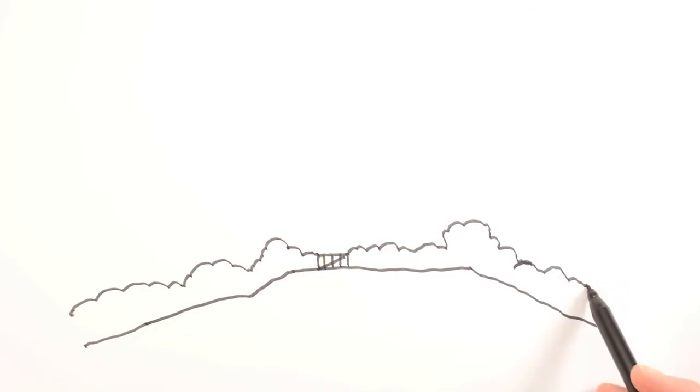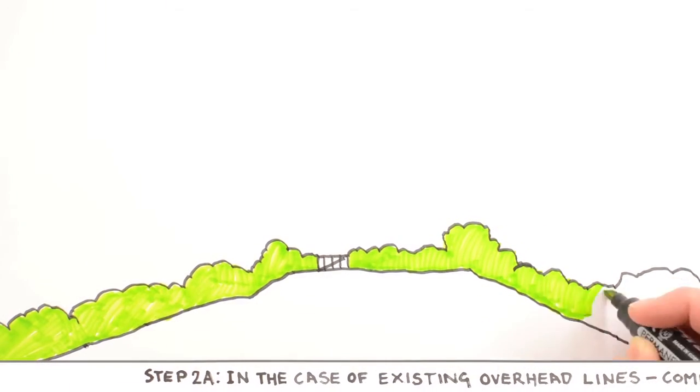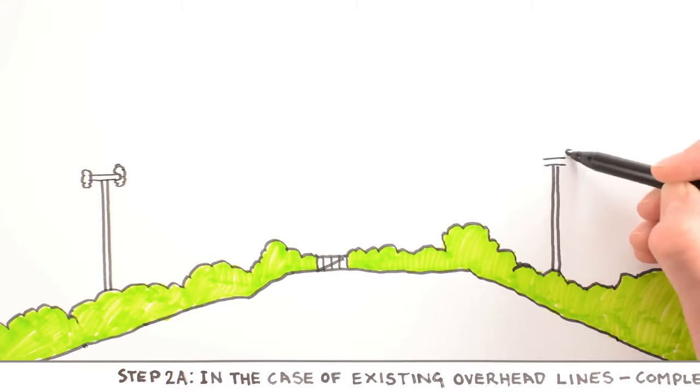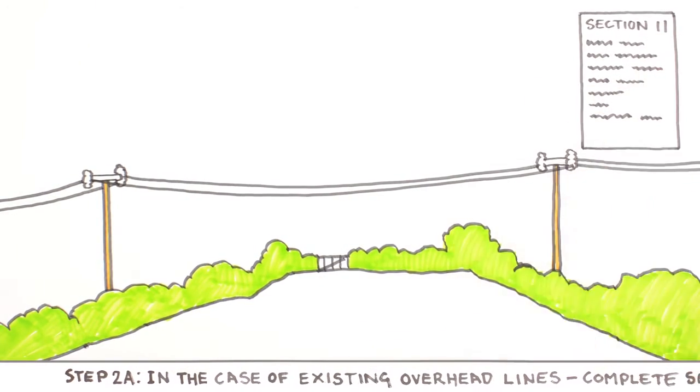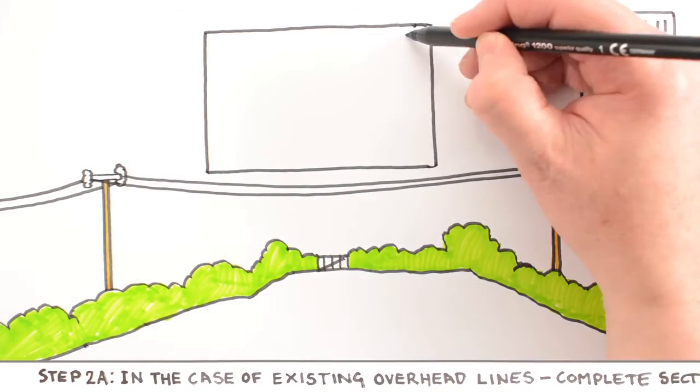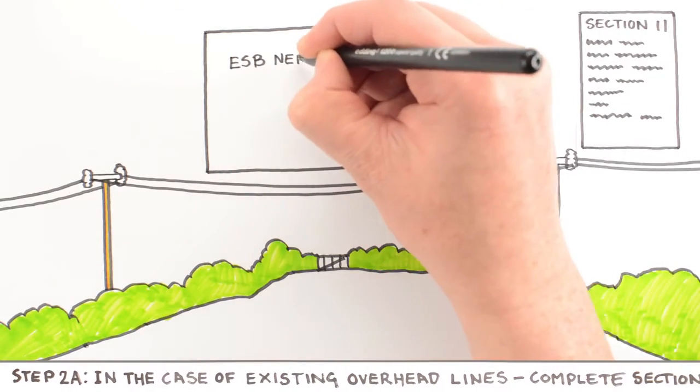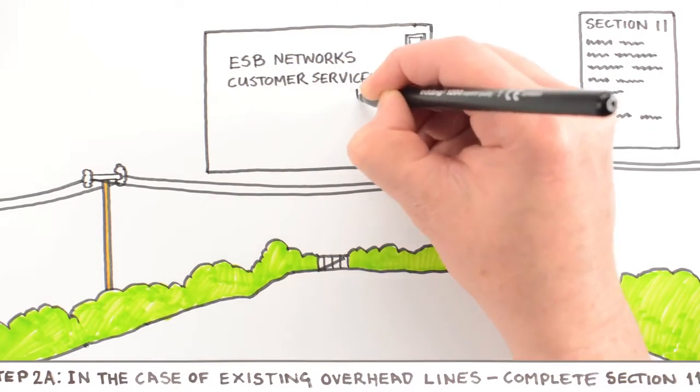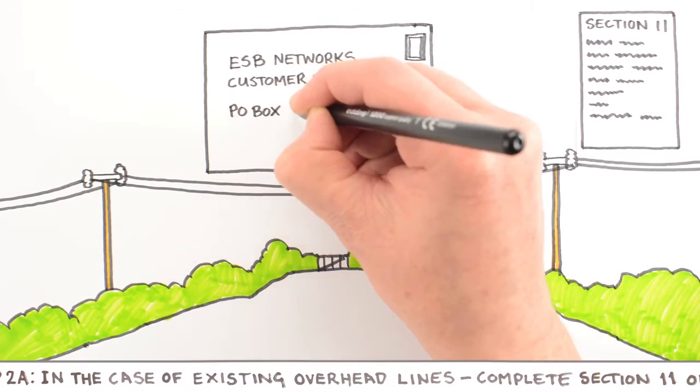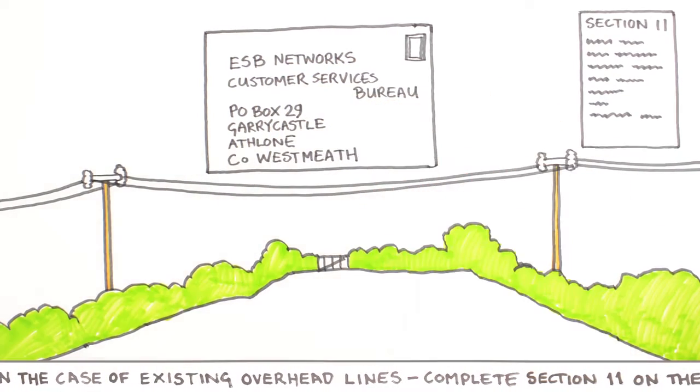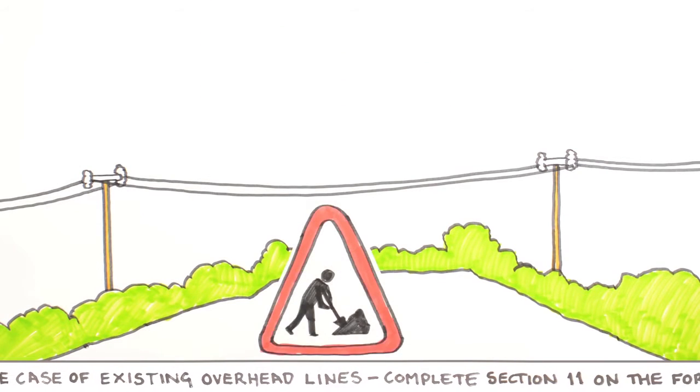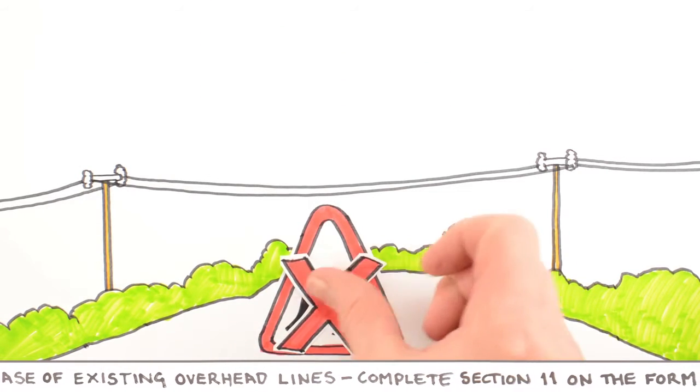If any overhead electricity lines are crossing your site, ensure you complete the additional information required in Section 11 of the form, and then send the completed form to ESB Networks, Customer Services Bureau, P.O. Box 29, Garrycastle, Athlone, County Westmeath. Do not commence any site works until you have made contact with us.